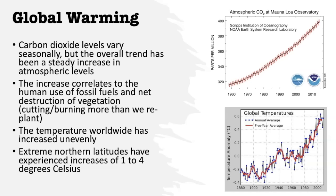We see that CO2 increase directly correlate to human use of fossil fuels and our net destruction of vegetation — basically we're cutting and burning more plants than we're replanting. As a result of that CO2 in the atmosphere, we are also seeing global temperatures show a constant increase. Look at the graph in the bottom right: the temperatures zigzag all over the place, but again we see that upward trend. Some parts of the world are actually warming faster than others — for example, our extreme northern latitudes around the north pole are experiencing temperature changes from one to four degrees Celsius.